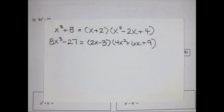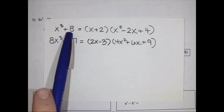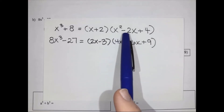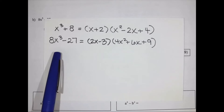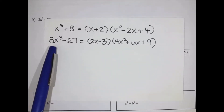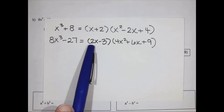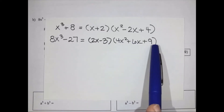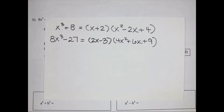The first expression, x cubed plus 8, factored down to x plus 2, times x squared minus 2x plus 4. The second expression, 8x cubed minus 27, factored down to 2x minus 3, times 4x squared plus 6x plus 9. In both cases, that second bracket did not factor any further.